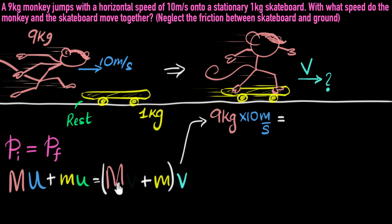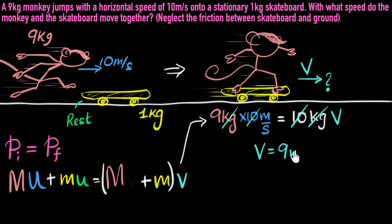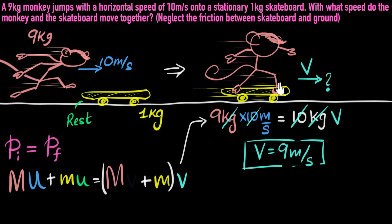Now we can plug in. The mass of the monkey is 9 kg times 10 meters per second, plus the initial velocity of the skateboard is zero because it was at rest, so that term goes to zero. That equals M plus m, which is 9 plus 1 = 10 kilograms, times V. We can now solve for V with some algebra — the 10 divides out and kilograms cancel. V equals 9 meters per second. So once the monkey jumps on that skateboard, they both take off with a speed of 9 meters per second.